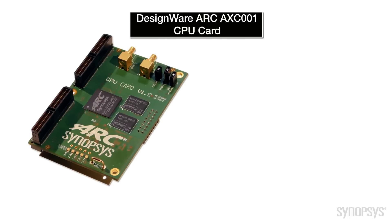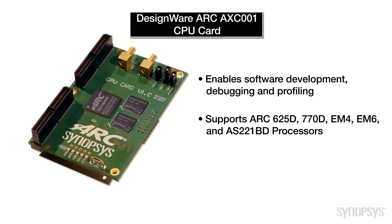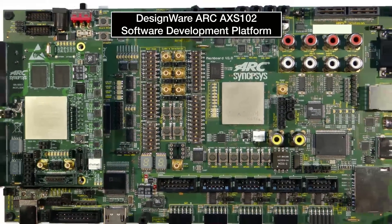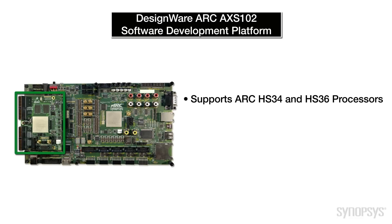The ARC software development platforms include CPU cards that enable software development, debugging and profiling on real hardware. The AXS101 software development platform incorporates a CPU card that supports the ARC 600, 700 and EM families and the AS200 audio processors in an ASIC implementation delivering at-speed operation.